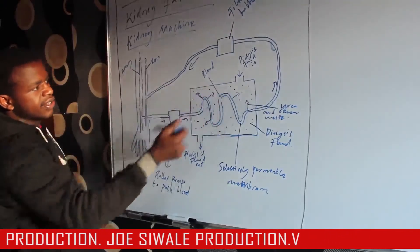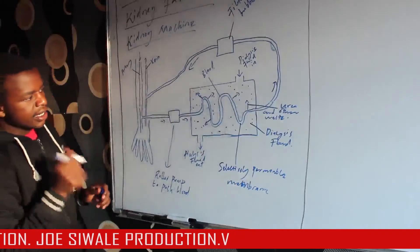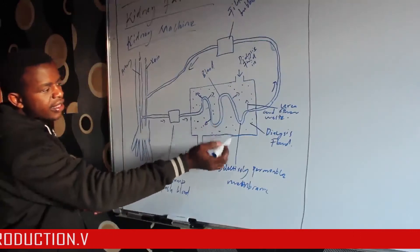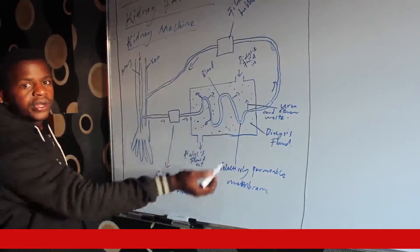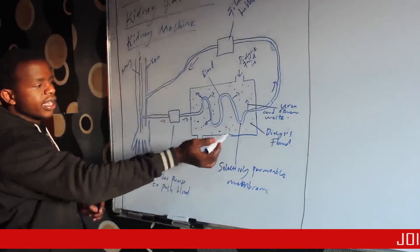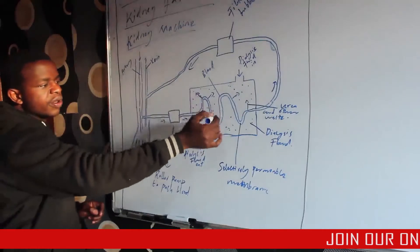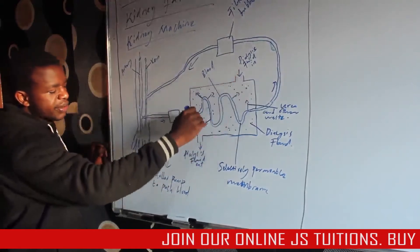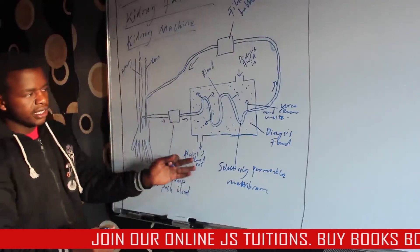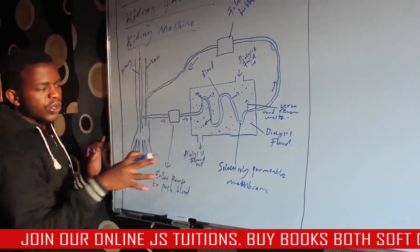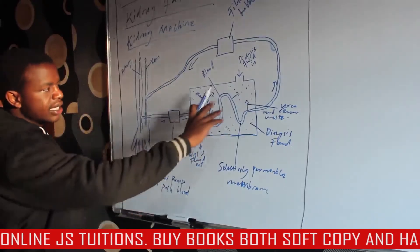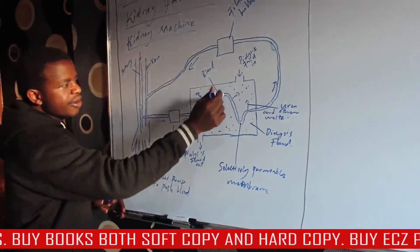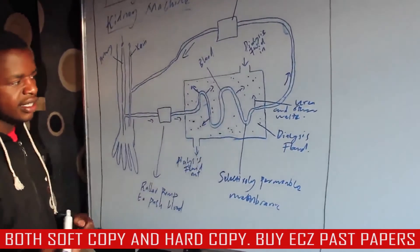The kidney machine is made up of selectively permeable tubes. The dialysis fluid does not contain urea, so due to the absence of urea, as blood flows through the tube, urea diffuses out of the tube into the dialysis fluid and then out of the machine. The dialysis fluid also contains useful substances found in blood, so those useful substances cannot diffuse from the blood into the dialysis fluid.